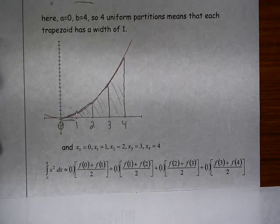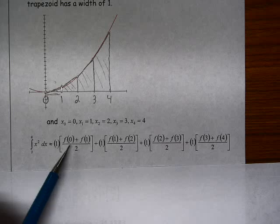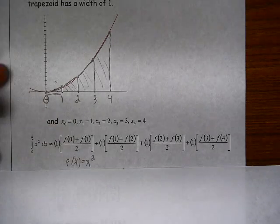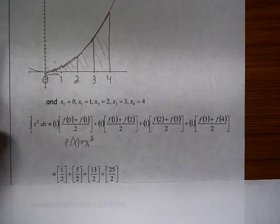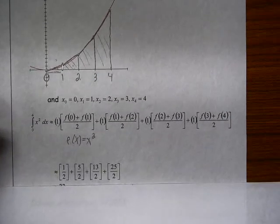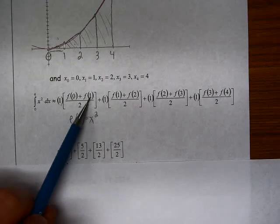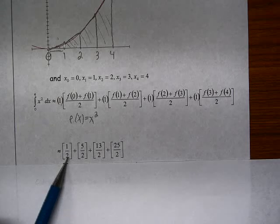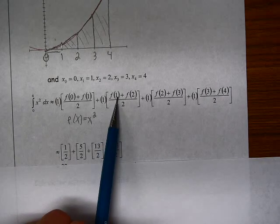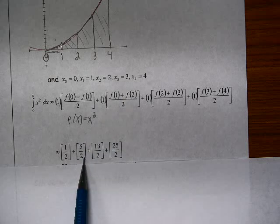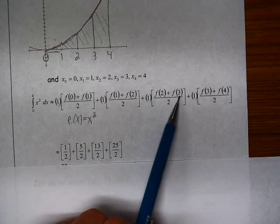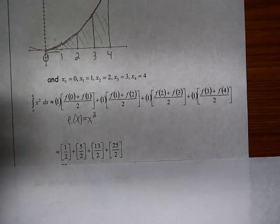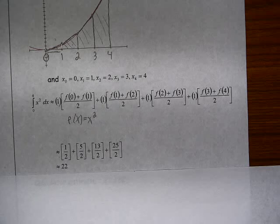Once we do that, then we can just evaluate it. So we know that f of x is x squared, so these are easy to evaluate. f of 0, 0 squared is 0, plus 1 squared is 1, over 2 is 1 half, times 1. That's where this 1 half comes from. 1 squared plus 2 squared is 5, 5 over 2. 2 squared plus 3 squared, 13 over 2. 3 squared plus 4 squared, 25 over 2. And we add those up, we get approximately 22.